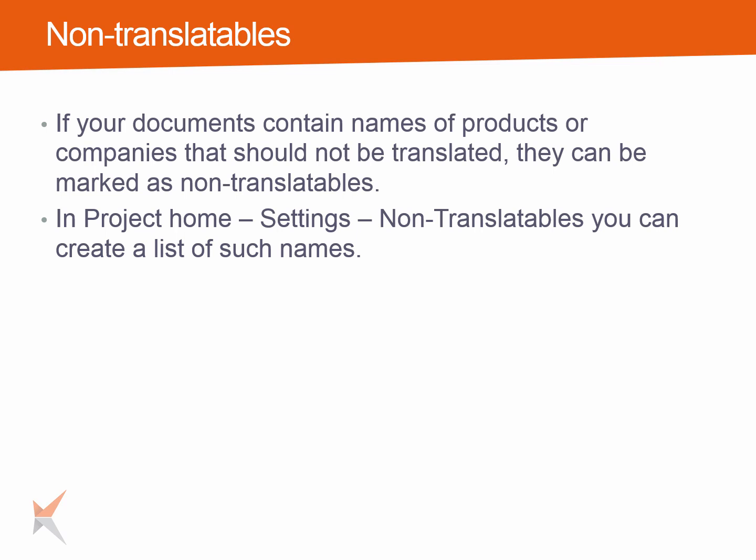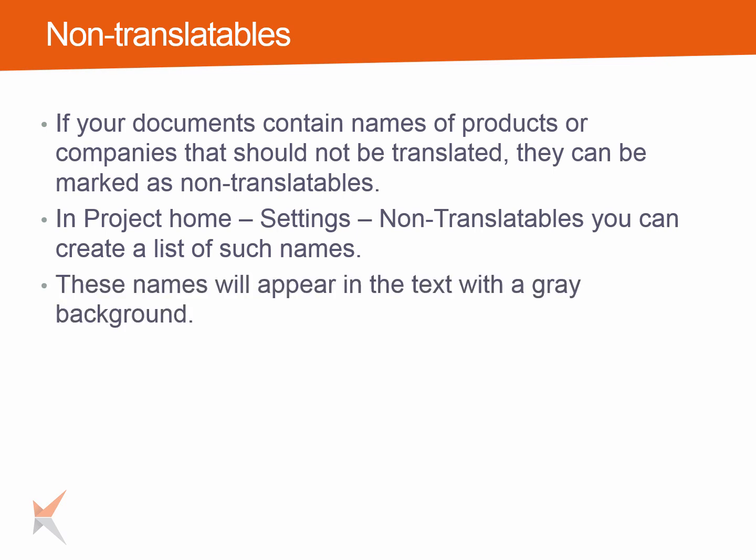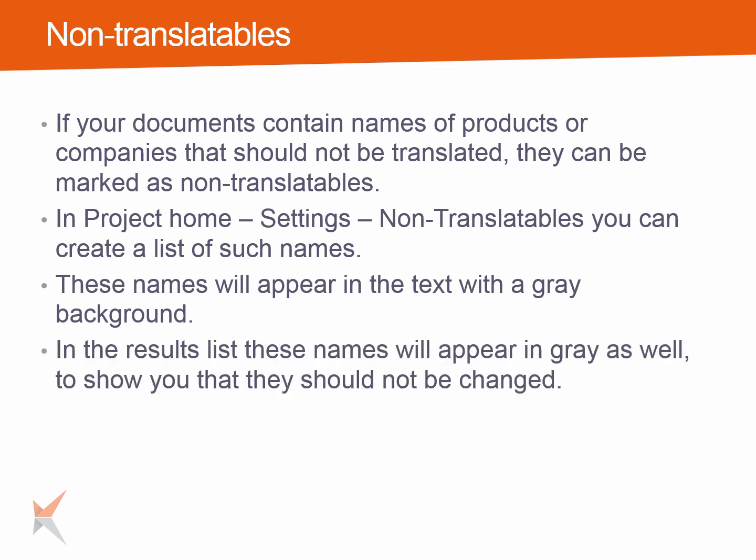In Project Home, go to Settings and Non-Translatables. There you can create a list of such names. These names will appear in the text with a grey background. In the results list, these names will appear in grey as well, to show you that they should not be changed.